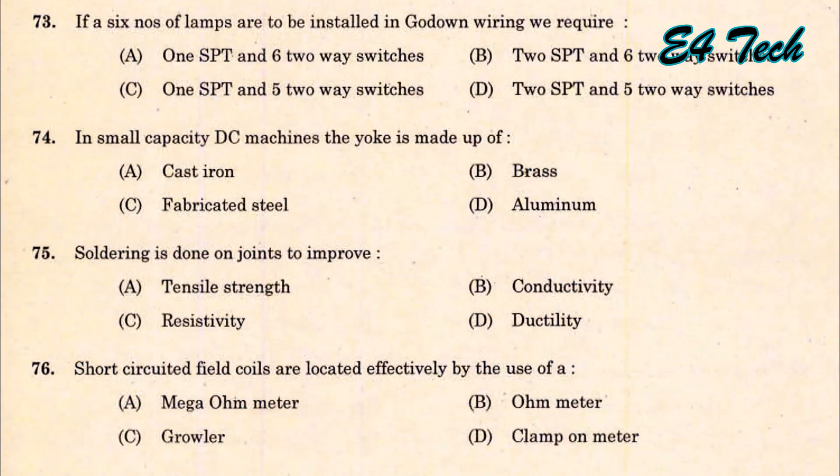If 6 lamps are to be installed in a godown wiring, we require one single-pole switch (SPT) and five two-way switches. That is option C.